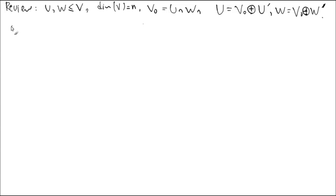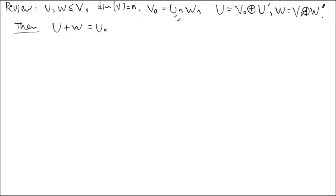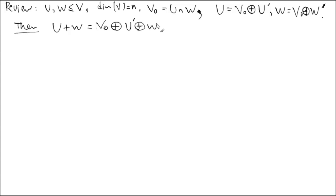What is the conclusion then? The usual sum u plus w: both u and w contain v0. V0 is the intersection of u and w, so v0 is viewed as a subspace of u — that's the common part. The remaining part is u prime, and also w prime. So that was the theorem.